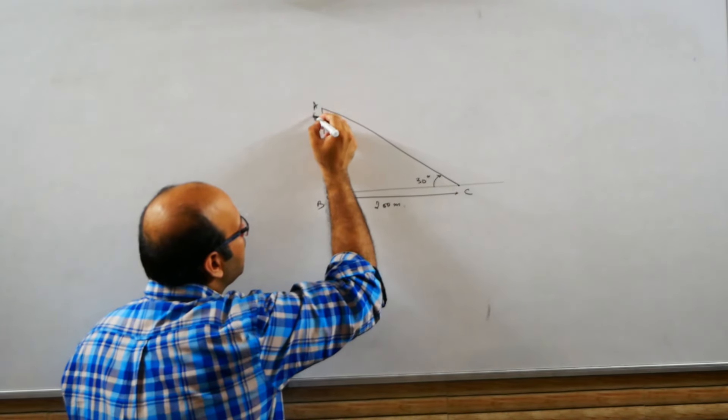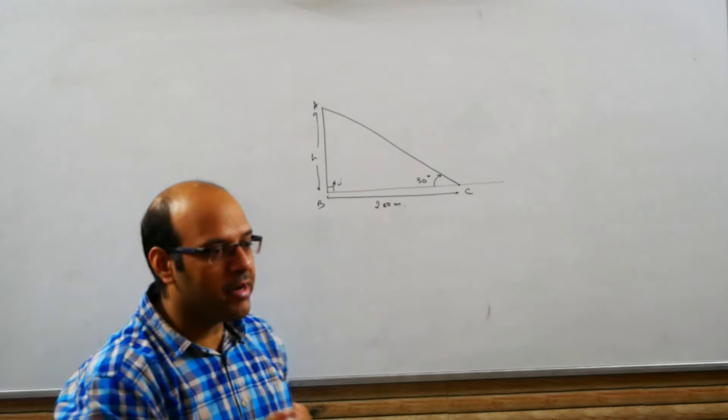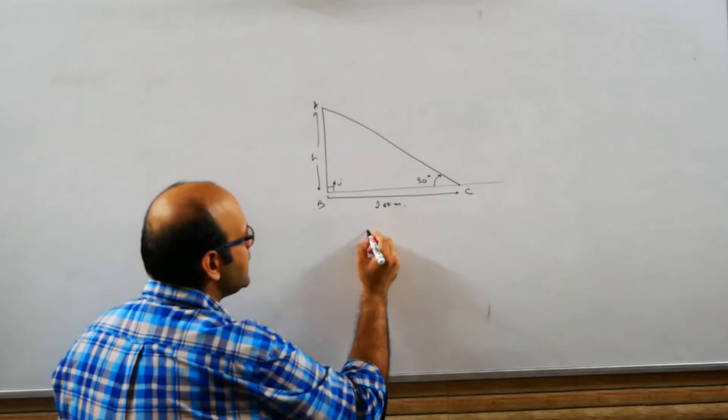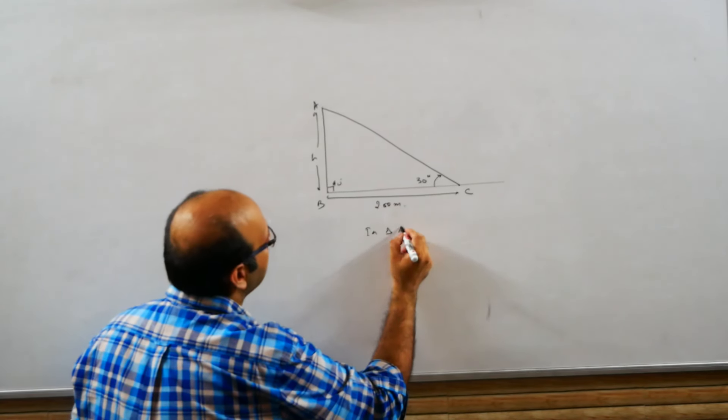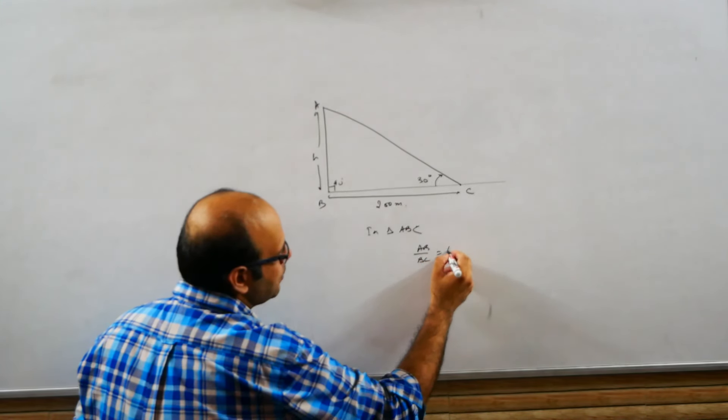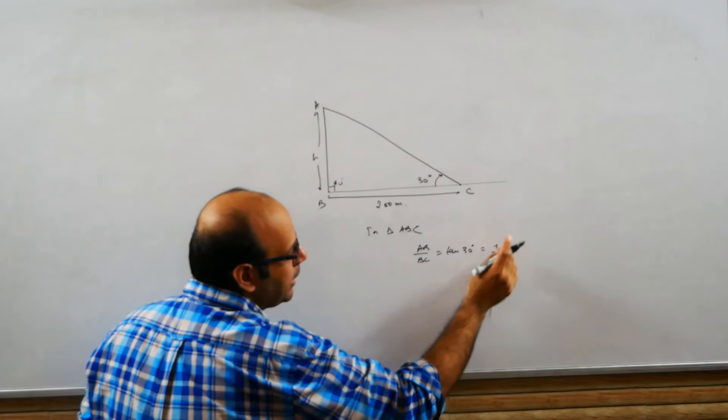So, perpendicular and base, is there any trigonometric relation? Tan 30 degrees. Right. So, I will say that in triangle ABC, AB upon BC, this is equal to tan 30 degrees, whose value you should remember from the table.